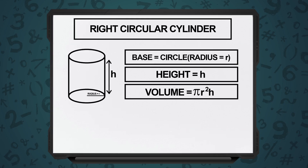So, whenever we talk about 3 dimensional figures, we have surface area and volume that comes into picture. Volume we know is area of base into height. So, in a right circular cylinder, the base is a circle, and the area of a circle is pi r square.